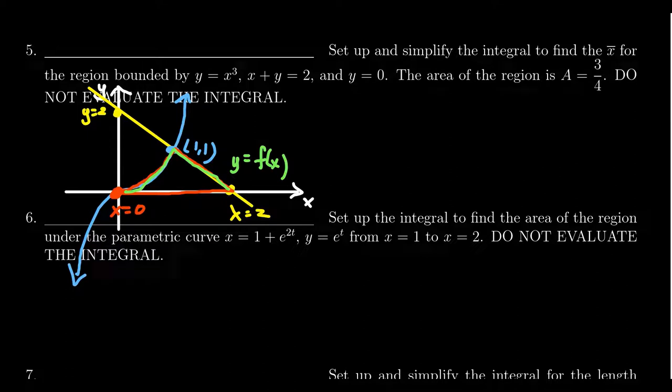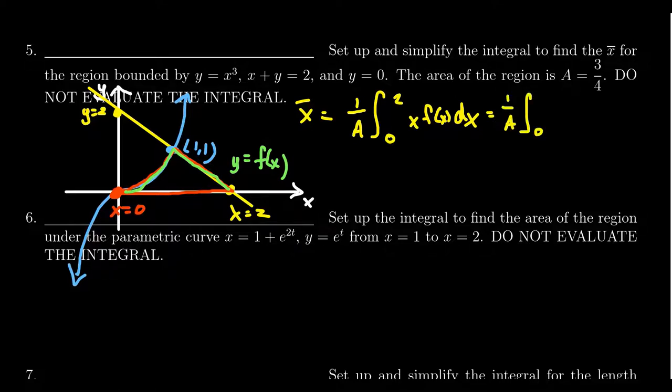Now, since we're looking for x bar, we can apply the formula for x bar, which is you take one over the area. So we have to find the area of the region. We'll come back to that in just a moment. We're going to integrate from zero to two. Then you end up with x, f of x dx, like so. So what we can then do is we can break this thing up at the point x equals one.